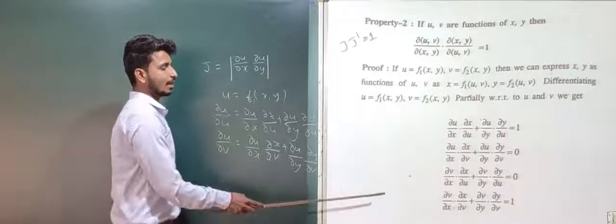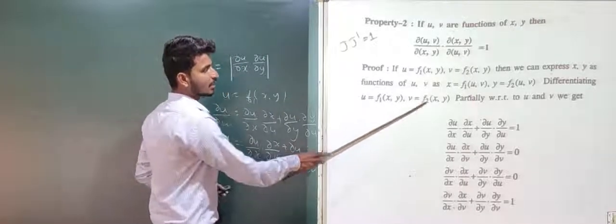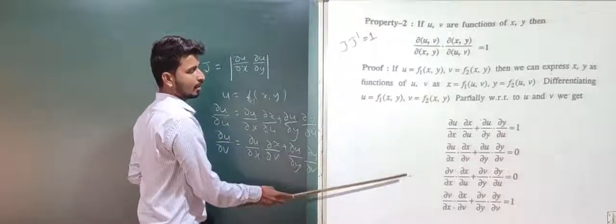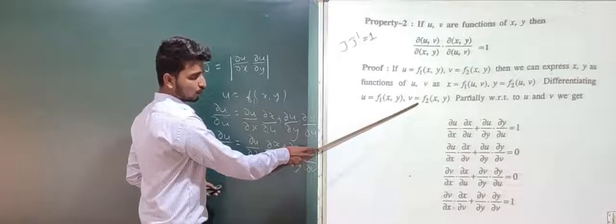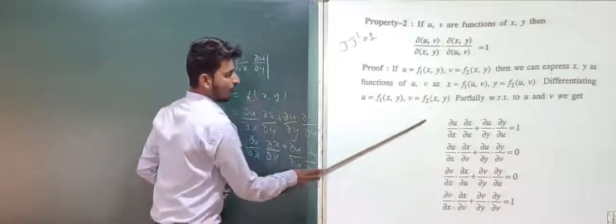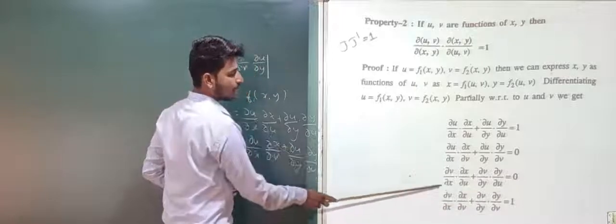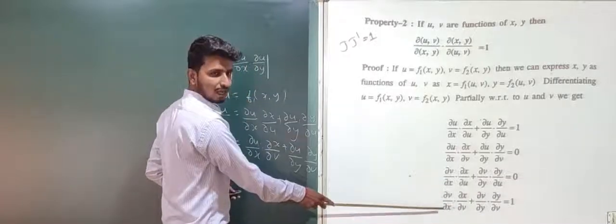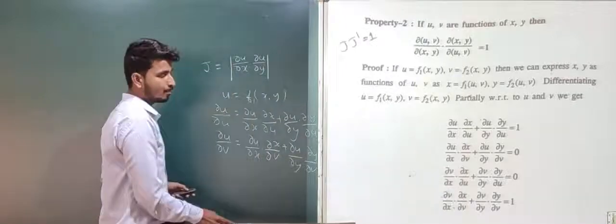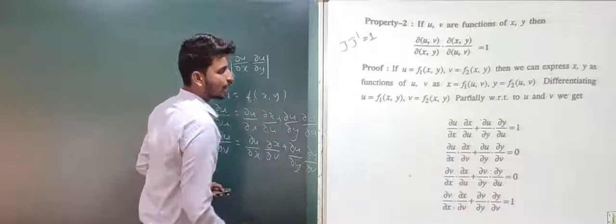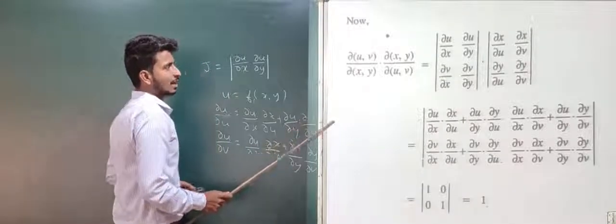Differentiating v = f₂(x,y) with respect to u gives 0, and with respect to v gives 1. That is: ∂v/∂x · ∂x/∂v + ∂v/∂y · ∂y/∂v = 1, and the corresponding derivative with respect to u equals 0.